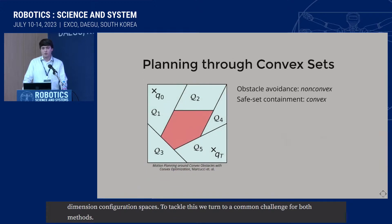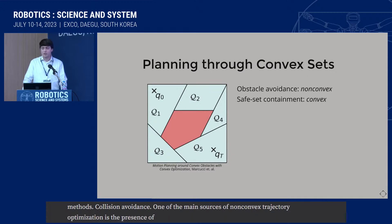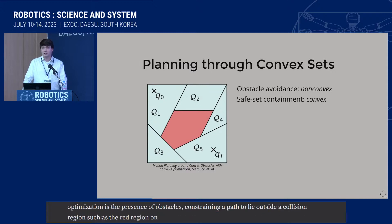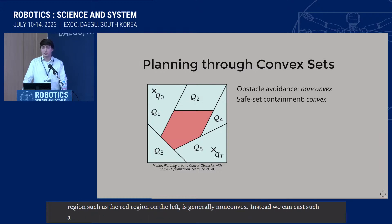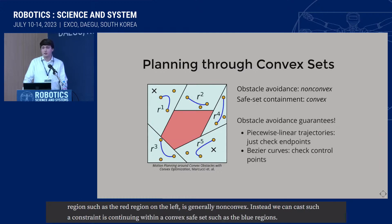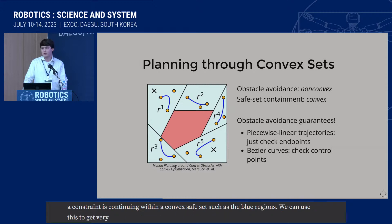One of the main sources of non-convexity in trajectory optimization is the presence of obstacles, as constraining a path to lie outside of a collision region — such as the red region on the figure on the left — is generally non-convex. Instead, we can cast such a constraint as containment within a convex safe set, such as these blue regions. We can use this to get very strong collision-free guarantees, as it's enough to just check the control points of a trajectory to ensure the whole trajectory is collision-free.